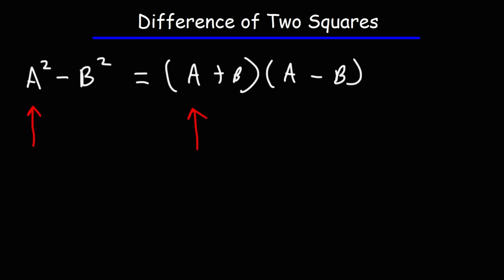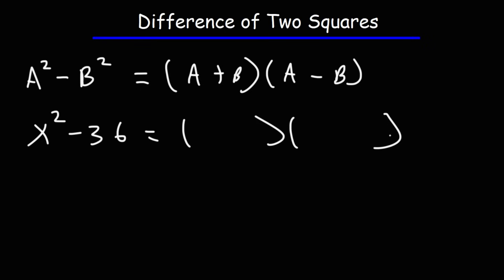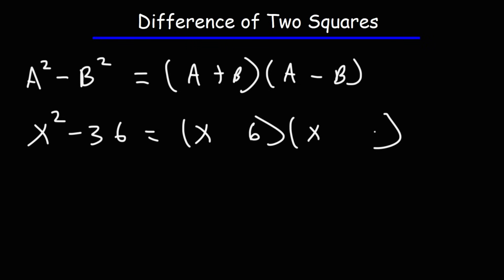Let's work on an example problem. Let's say we want to factor x squared minus 36. The square root of x squared is x, or x to the first power — you simply take the exponent divided by 2. The square root of 36 is 6. One of them is going to have a plus and the other is going to have a minus. So that's how you can factor x squared minus 36 using this formula: x plus 6 times x minus 6.